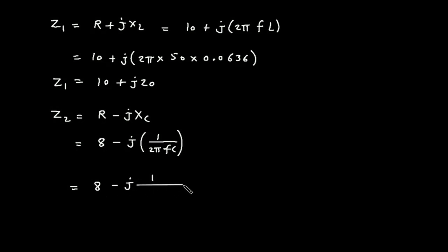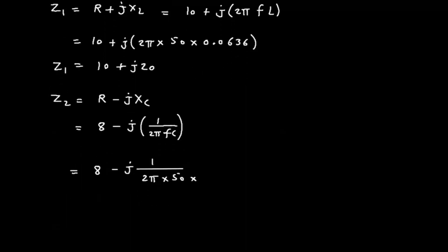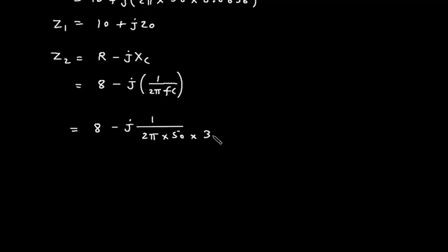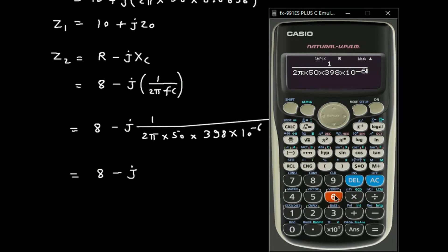So Z2 = 8 − j·(1/(2π × 50 × 398 × 10⁻⁶)). The value for C is 398 microfarad. This gives XC ≈ 7.99, so approximately 8. Therefore Z2 = 8 − j8.